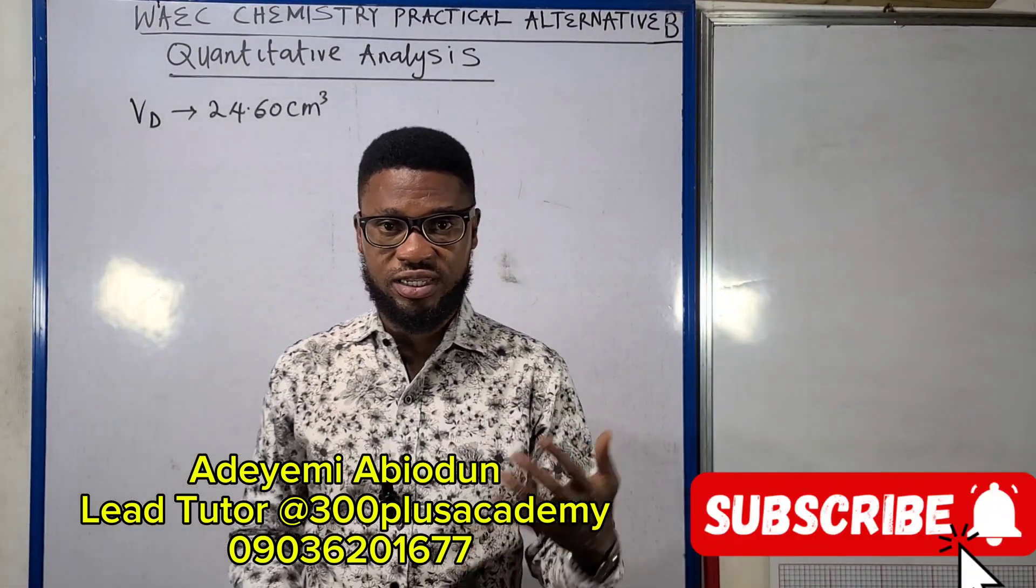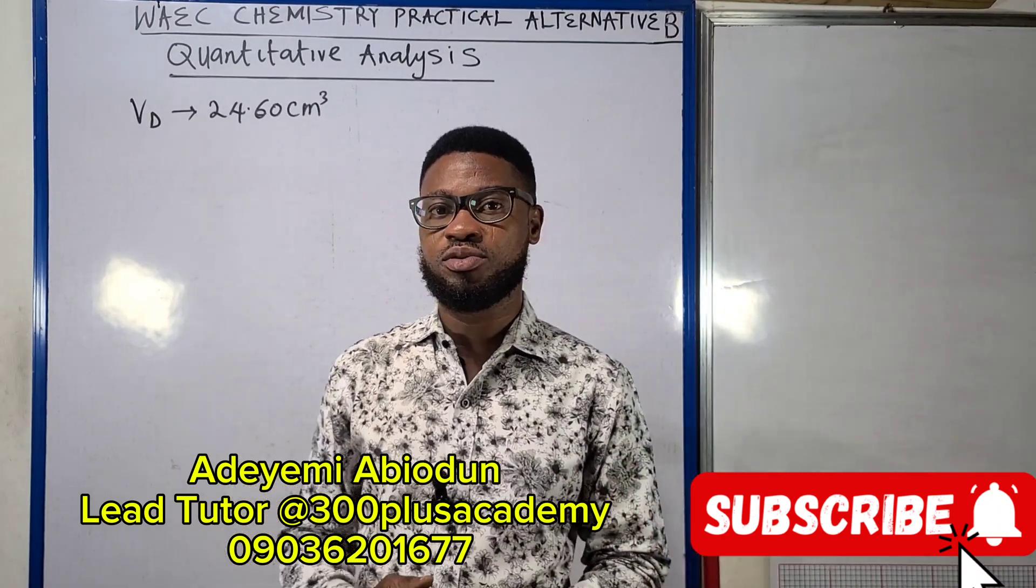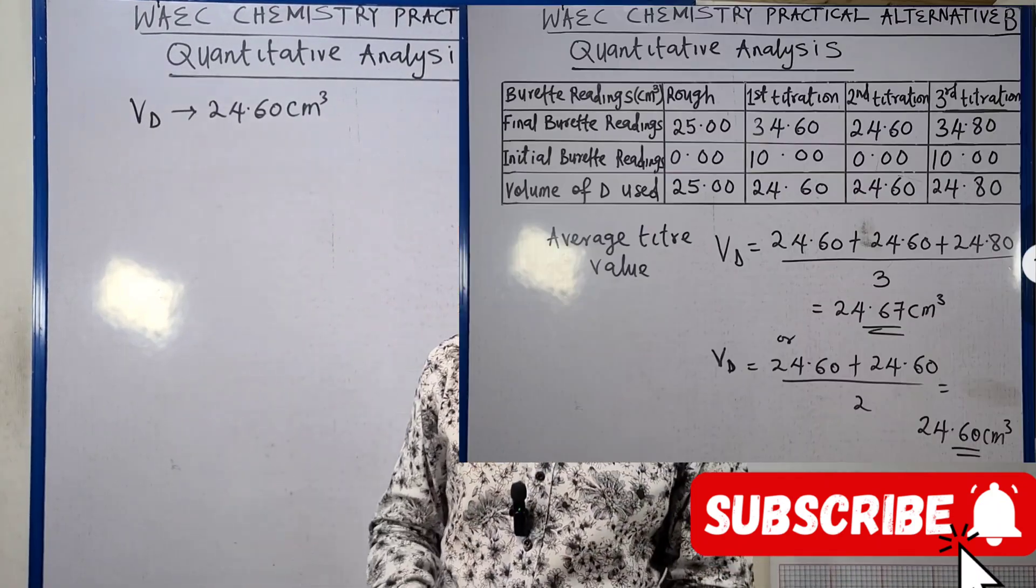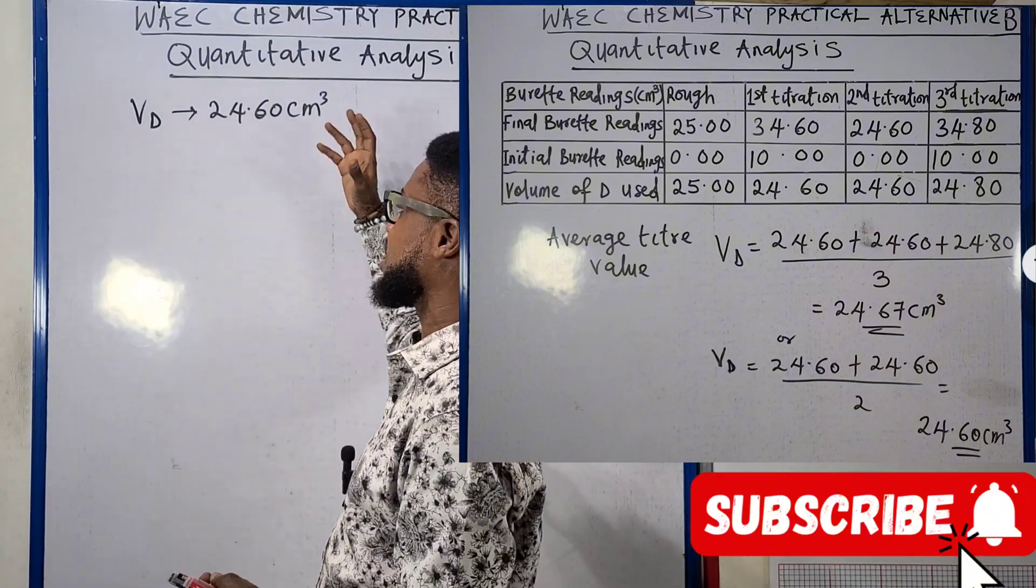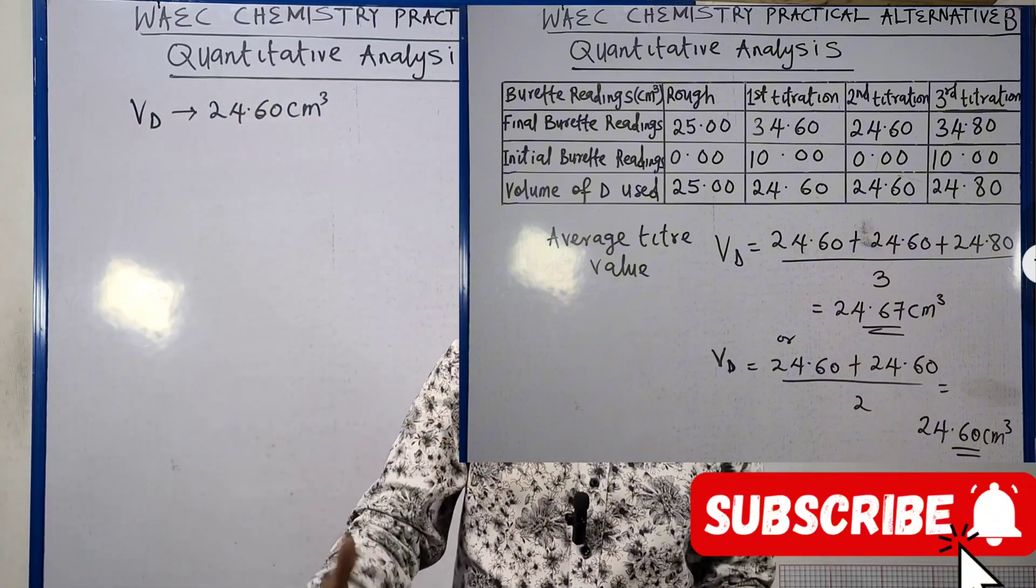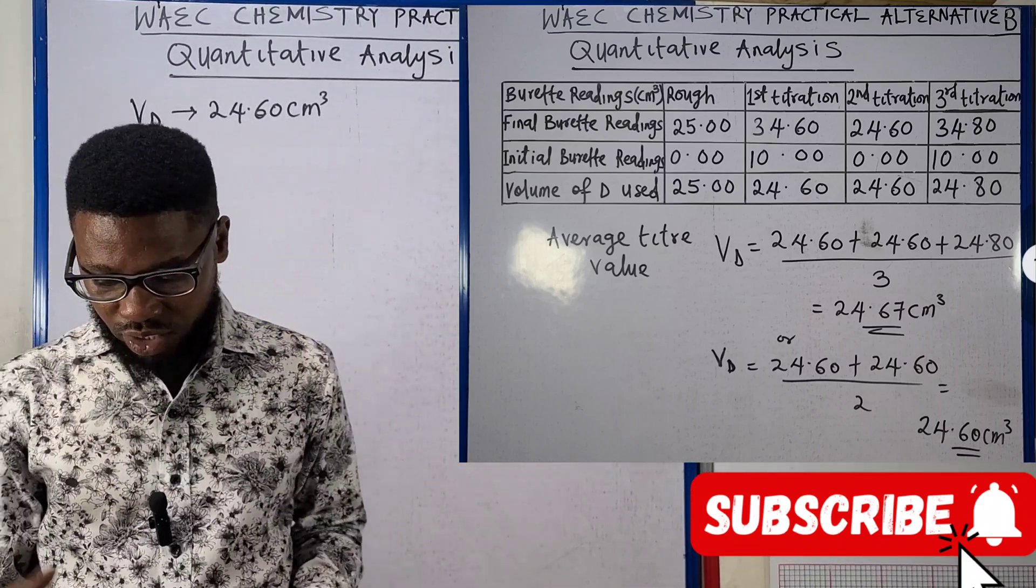Like we've said in a previous lecture video, we've looked at our titration table, we've looked at the average titre value, and we've concluded we are going to be using 24.60 cm³ or 24.67 cm³.